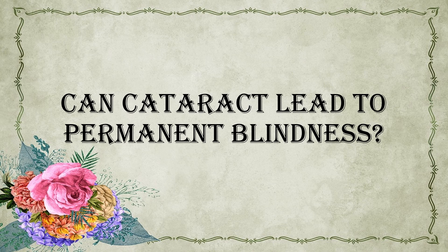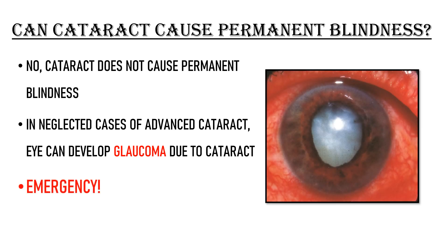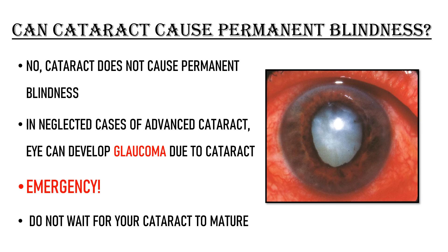Can cataract lead to permanent blindness? No, in the majority of cases, cataract does not cause permanent blindness. However, in some neglected cases of advanced cataract, the eye can develop glaucoma due to the cataract, and if not treated as an emergency, this glaucoma may lead to blindness by causing irreversible damage to the nerve of the eye. This is another very important reason why you should not wait for your cataract to mature.